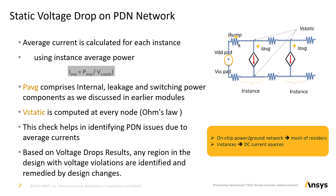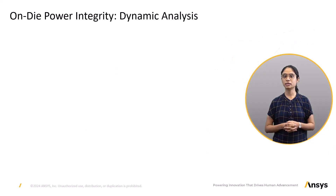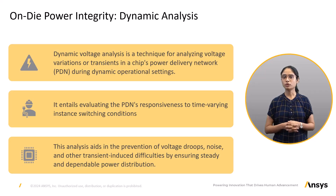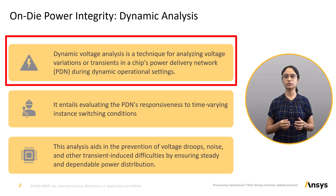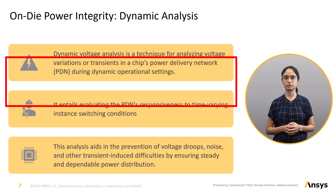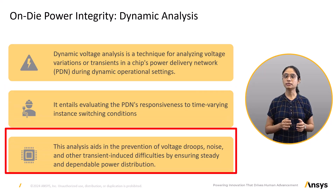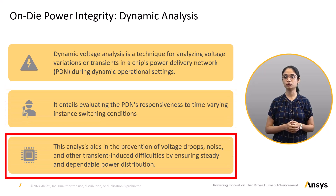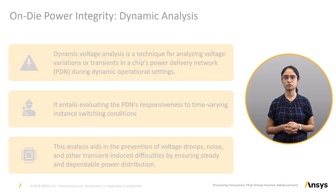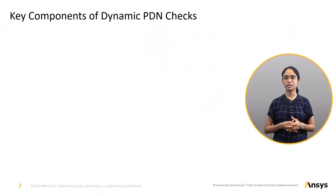Based on the voltage drop results at each instance pin, any regions in the design with voltage violations are identified and remedied by design changes. On-die power integrity dynamic checks. Dynamic voltage analysis is a technique for analyzing voltage variations or transients in a chip's power delivery network during dynamic operational settings. It involves evaluating the PDN's responsiveness to time-varying instance switching conditions. This analysis aids in the prevention of voltage droops, noise and other transient-induced difficulties by ensuring steady and dependable power distribution.